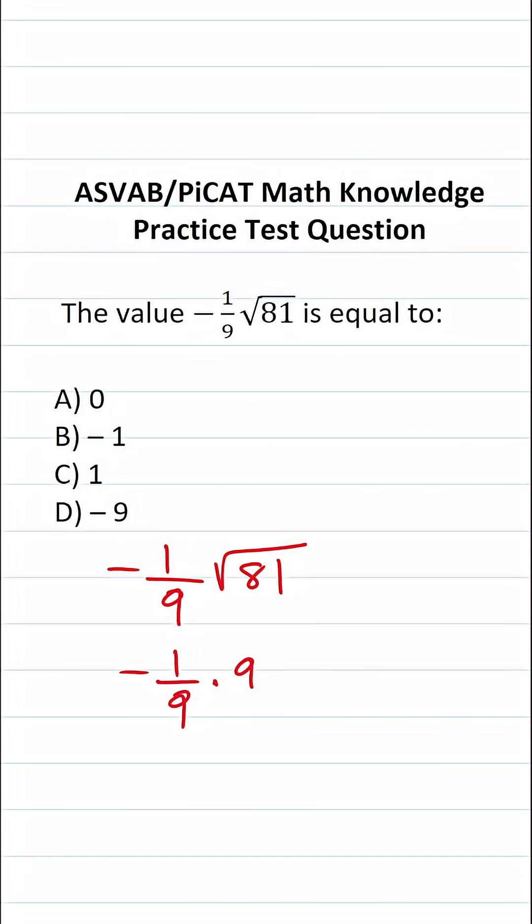So this becomes negative one-ninth times nine. I can write nine as a fraction by placing it over one. So I have negative one-ninth times nine over one—that is, a negative times a positive.